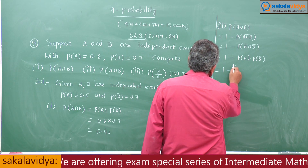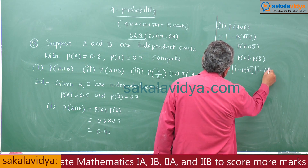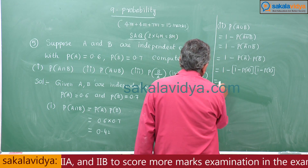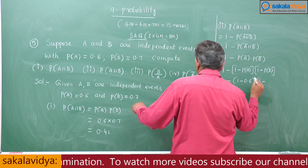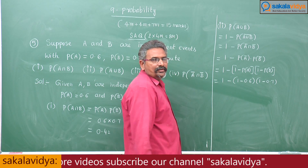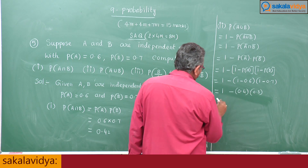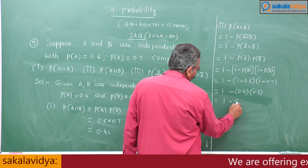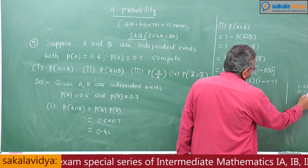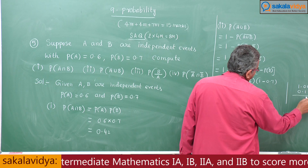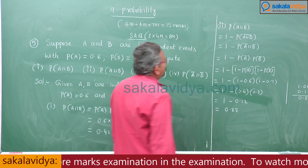So now this is 1 minus (1 minus P(A)) into (1 minus P(B)), which equals 1 minus (1 minus 0.6) into (1 minus 0.7). This is 1 minus 0.4 into 0.3, giving 1 minus 0.12. Subtracting: 1.00 minus 0.12 equals 0.88. So the second answer is 0.88.